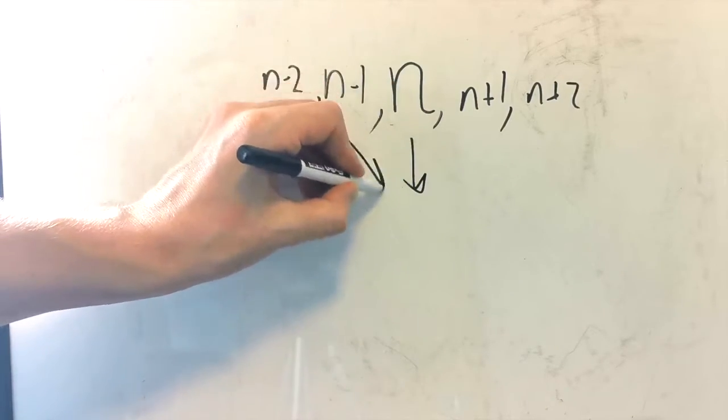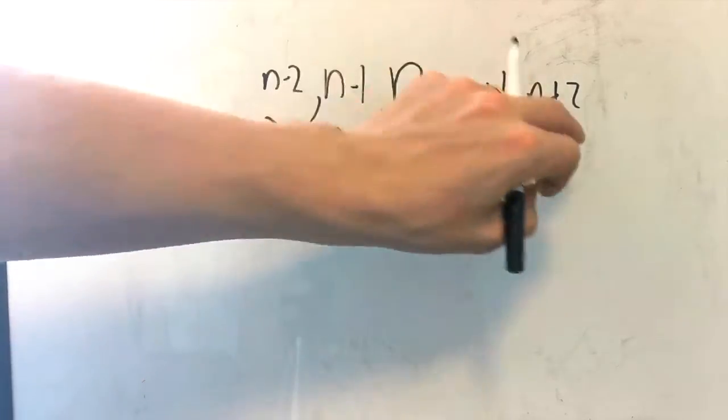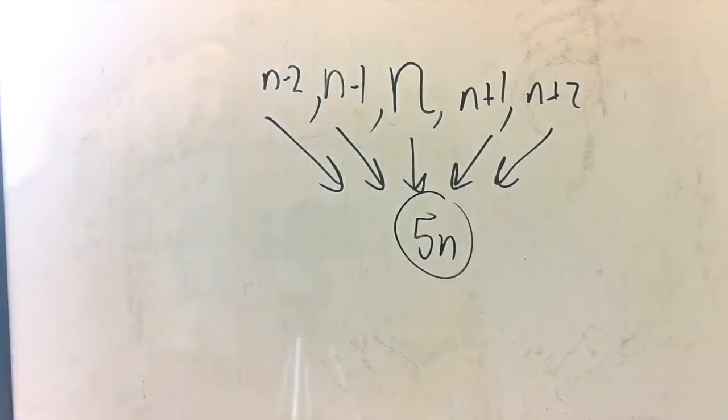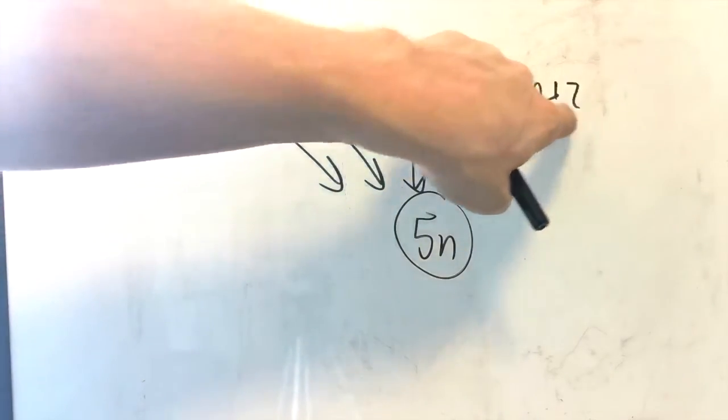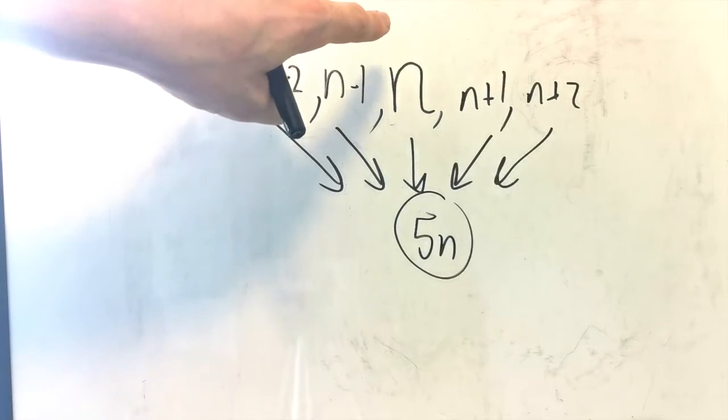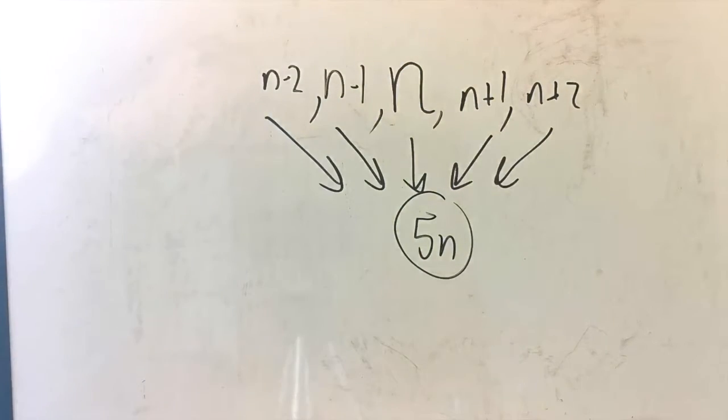When you add all these together, the plus 1 and the minus 1, and the minus 2 and the plus 2, you cancel out, and you just end up with 5n. So sometimes, the sum of n consecutive integers is just n times whatever the middle number is. That's a really cool little technique that pops up now and again, and it can save you a lot of working.